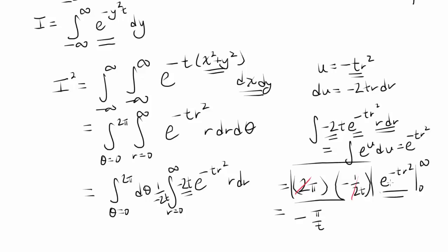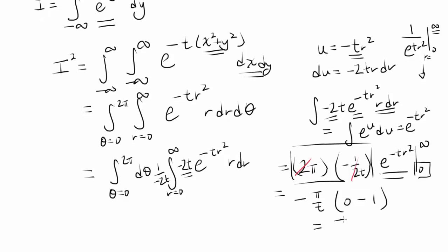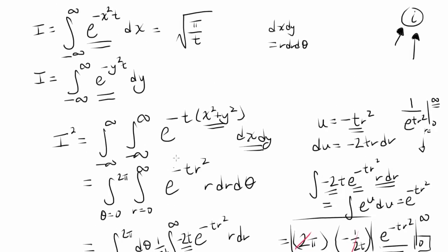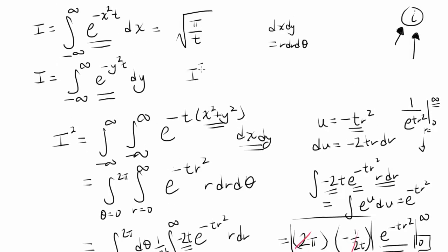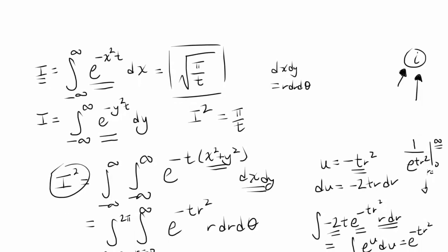We have e to the negative t r squared, which is the same as 1 over e to the t r squared, evaluated from 0 to infinity. When r approaches infinity, we're dividing by something approaching infinity, so that's 0. When r equals 0, we have e to the power of 0, which is 1. So we have 0 minus 1, and combining with the negative one over 2t and 2pi, this entire thing evaluates to pi over t. So i squared equals pi over t, telling us that i equals square root of pi over t, and we are done.